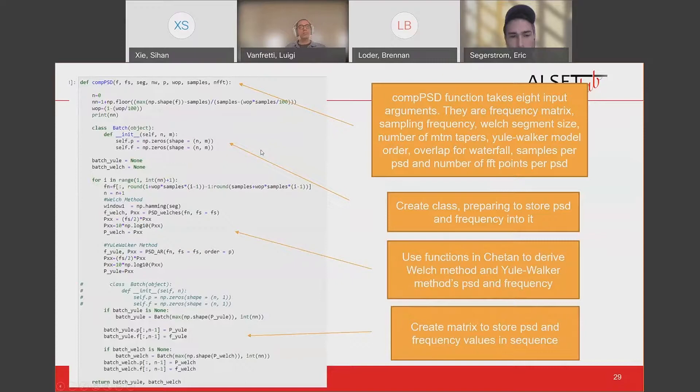This is the COMPSD function, where a class is created in the first part of coding in order to prepare to store the PSD and the frequency in it. In the second part, I use the PSD Welch and the PSD AR function to derive the PSD and the frequency. In the last part of the code, a matrix is created to store the PSD and the frequency values in sequence. The function returns Yule-Walker class and Welch class, which contain the PSD matrix and the frequency matrix.